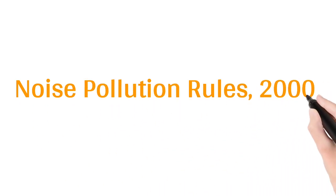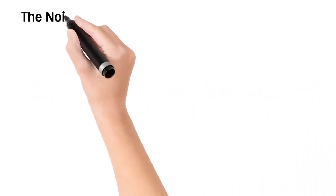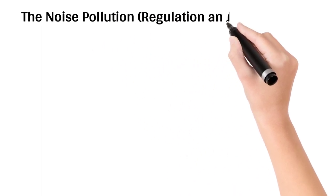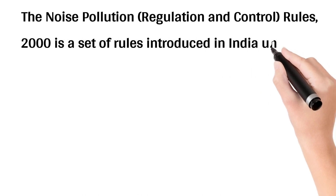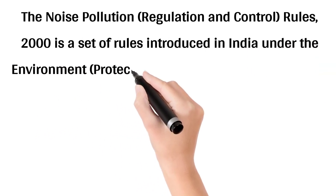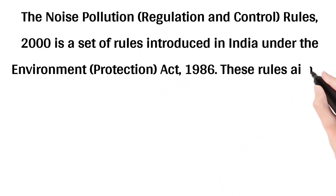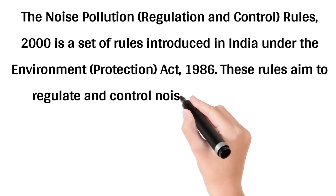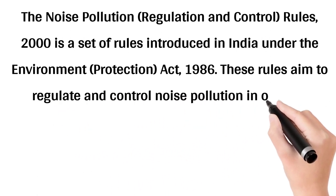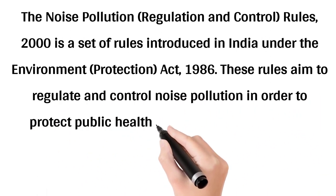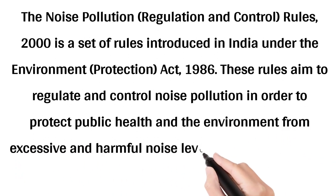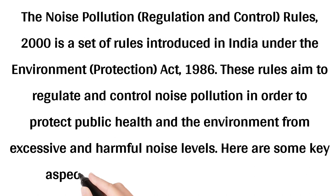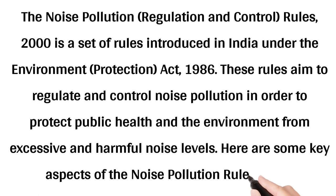The Noise Pollution (Regulation and Control) Rules, 2000 is a set of rules introduced in India under the Environment Protection Act, 1986. These rules aim to regulate and control noise pollution in order to protect public health and the environment from excessive and harmful noise levels. Here are some key aspects of the Noise Pollution Rules, 2000.